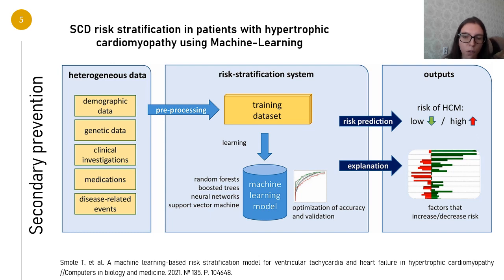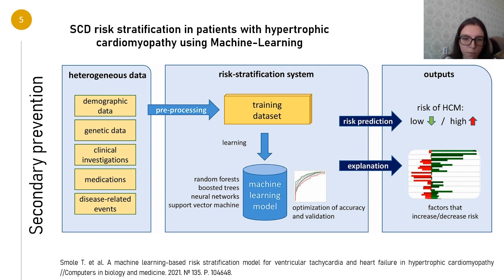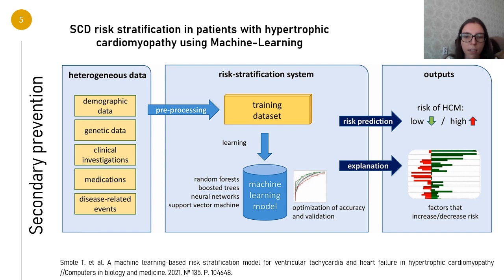They also used neural networks, along with a large amount of clinical, genetics, imaging, and laboratory data. The model reported better ventricular tachycardia prediction, which may be the cause of sudden cardiac death, with an AUC of 0.9.